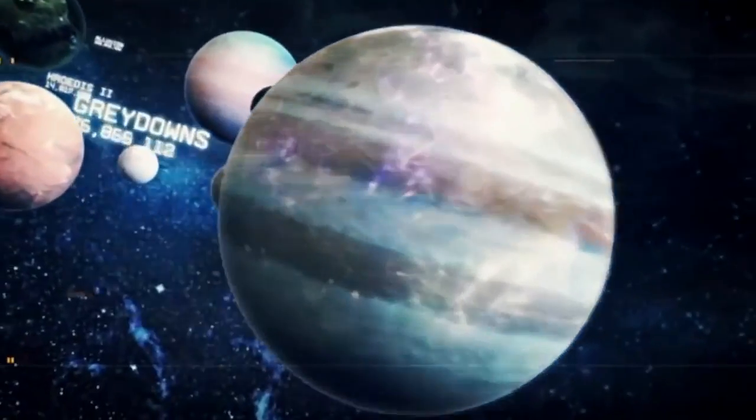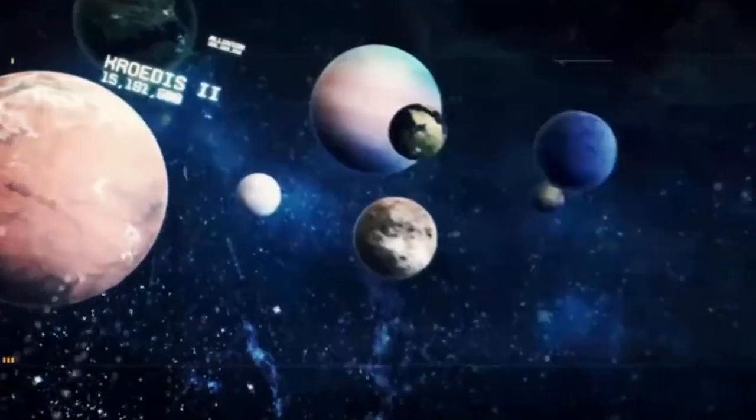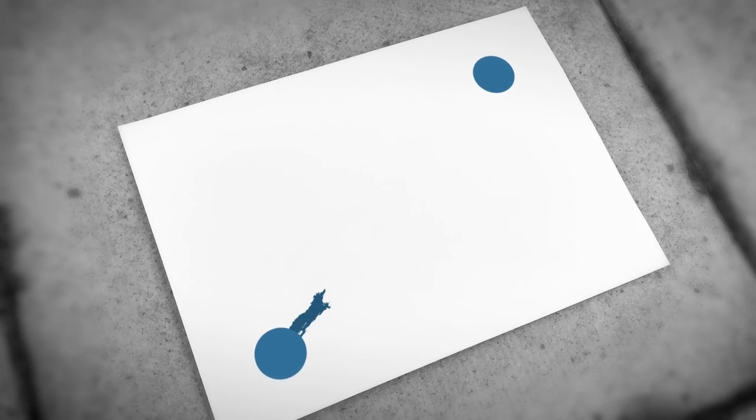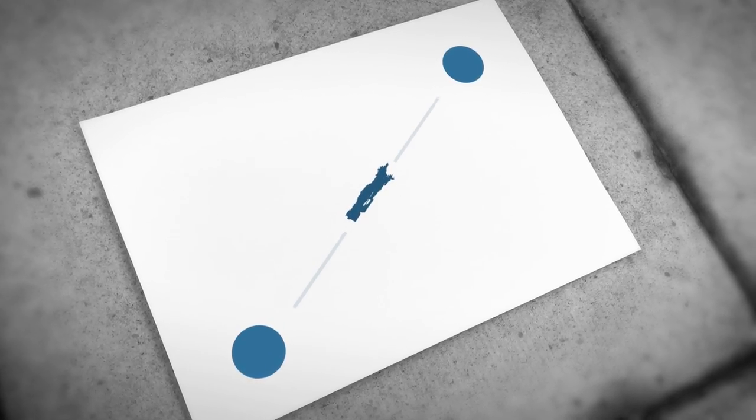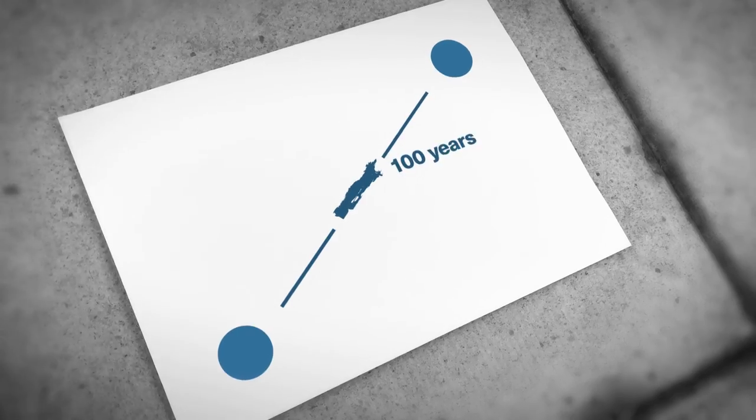So, again using the sheet of paper as an analogy, if normal space that we experience every day is a two-dimensional plane, slipstream space is that plane scrunched up into a ball. You can now see that different parts of the paper are now connected, but you'll also notice that each part is of different lengths, and as a result, it runs at different speeds.